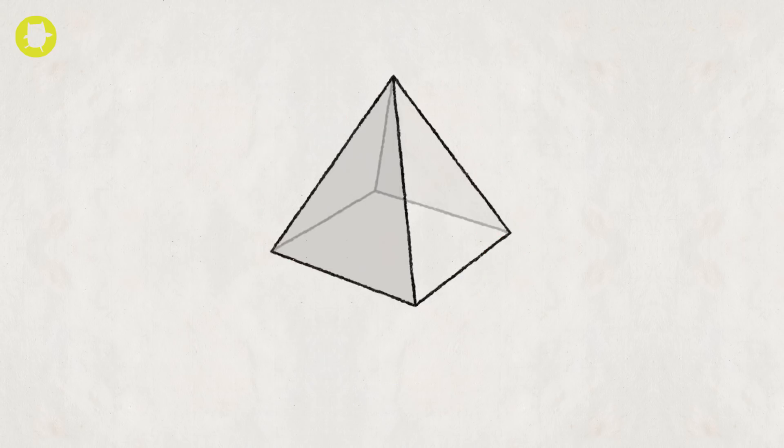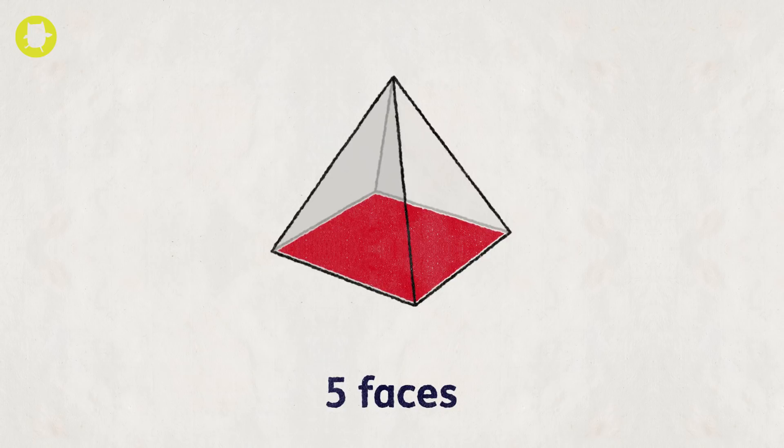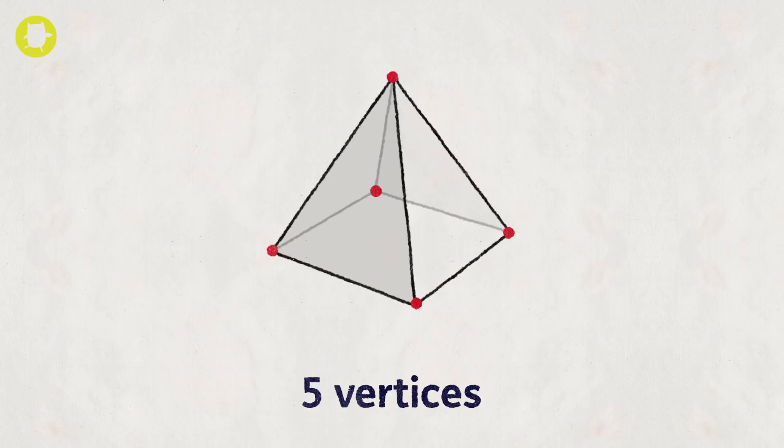A square-based pyramid has five faces, five vertices, and eight edges.